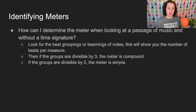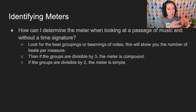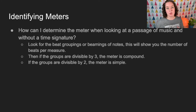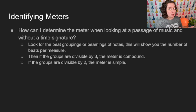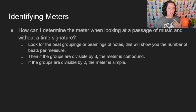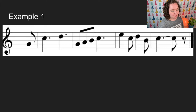First, you want to look for the beat groupings or beamings of notes. This will show you the number of beats per measure — if you're seeing three main groupings, it's probably a triple meter; two main groupings, probably duple. Then look at how those beat groupings are divided: lots of divisions of three indicates compound meter, divisions of two indicates simple.